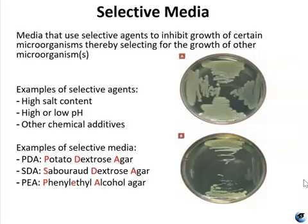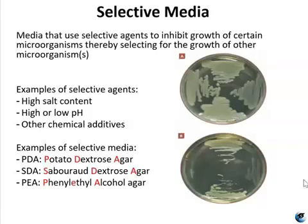The next three media we will talk about — PDA, SDA, and PEA — are all selective. In total, there are six types of media in this lab session classified as selective. In addition to PDA, SDA, and PEA, we also have EMB, MacConkey, and MSA. However, EMB, MacConkey, and MSA agar are not just selective — they're also differential. We'll talk about that more in a moment.